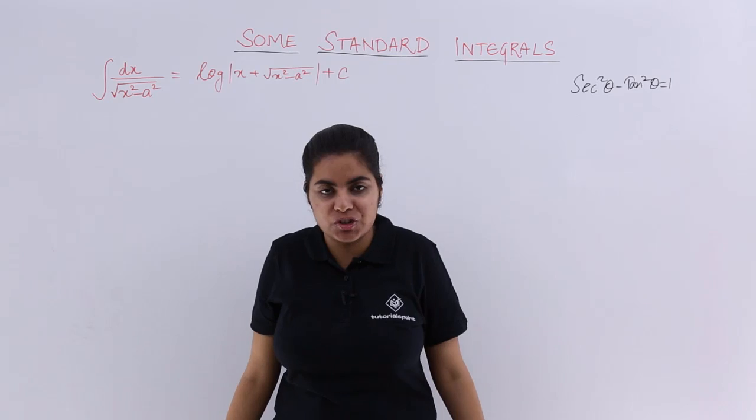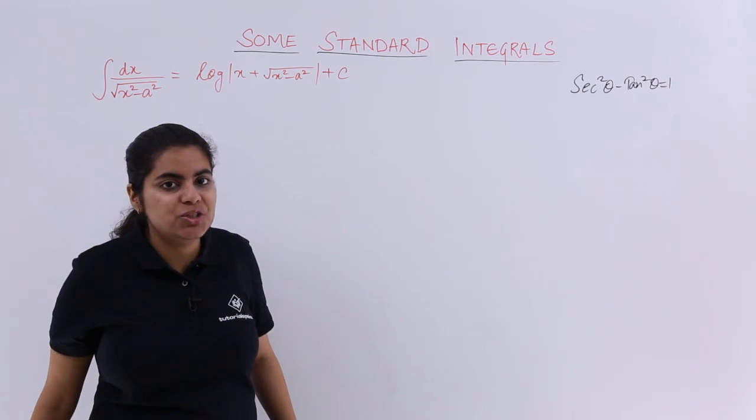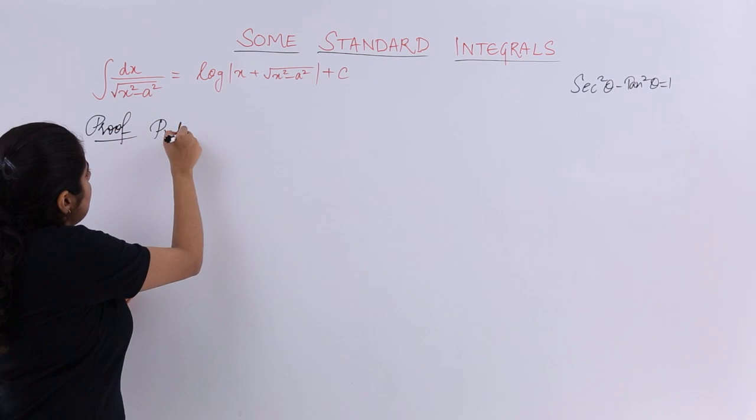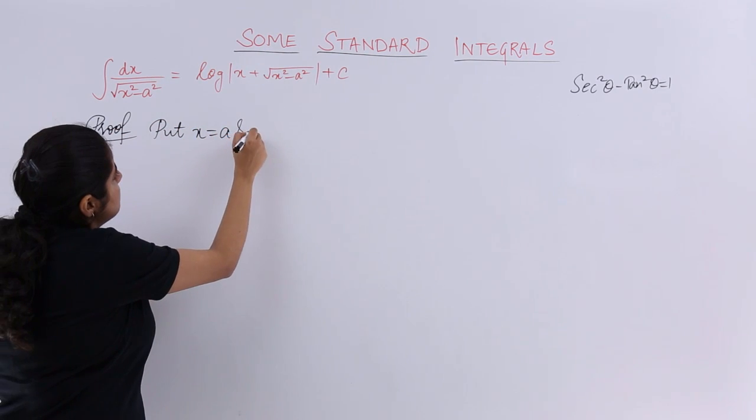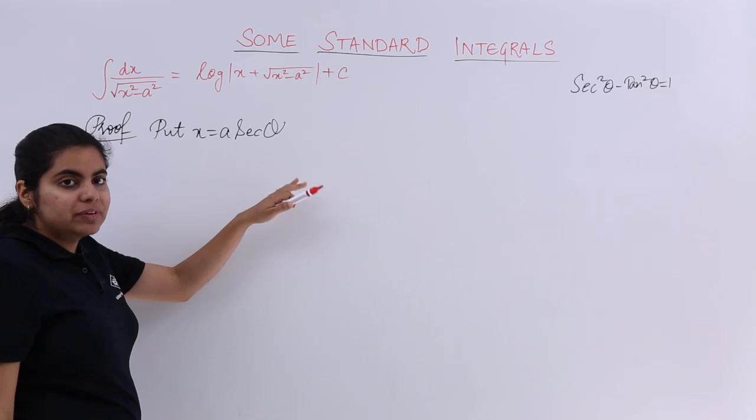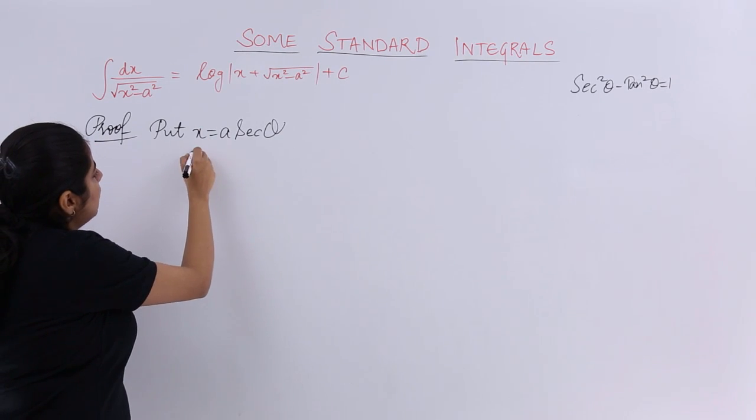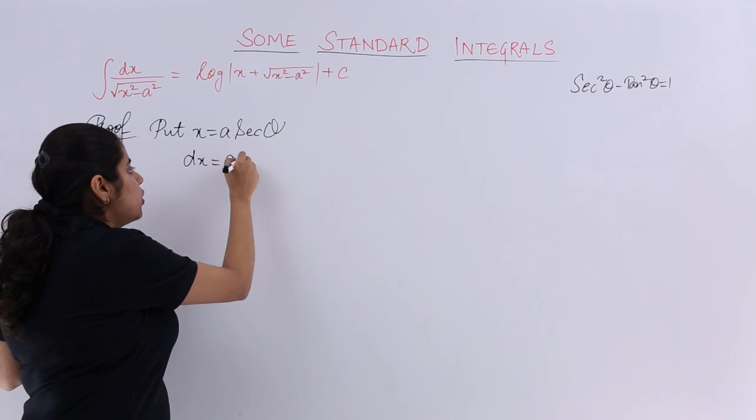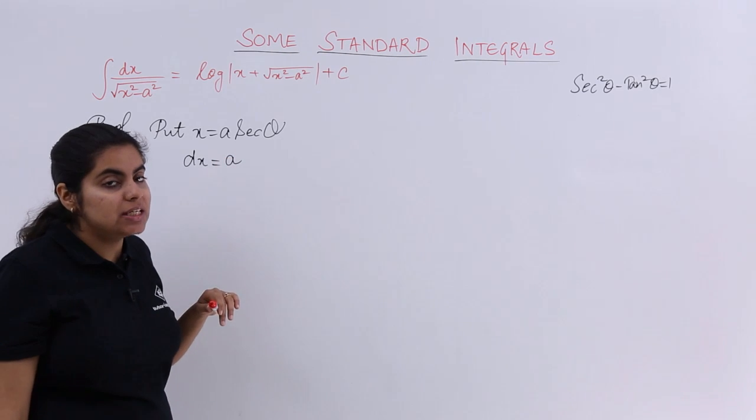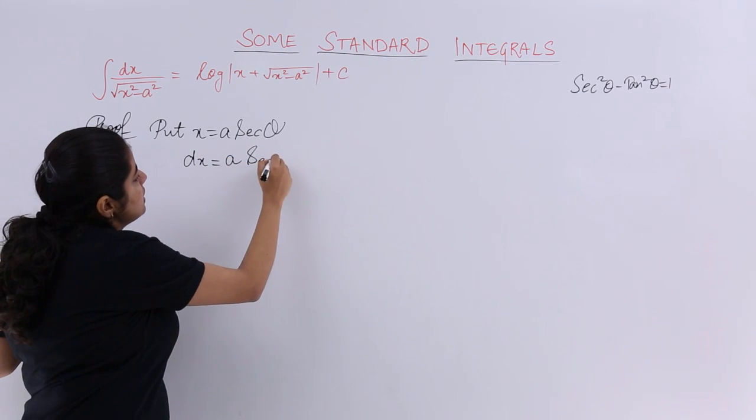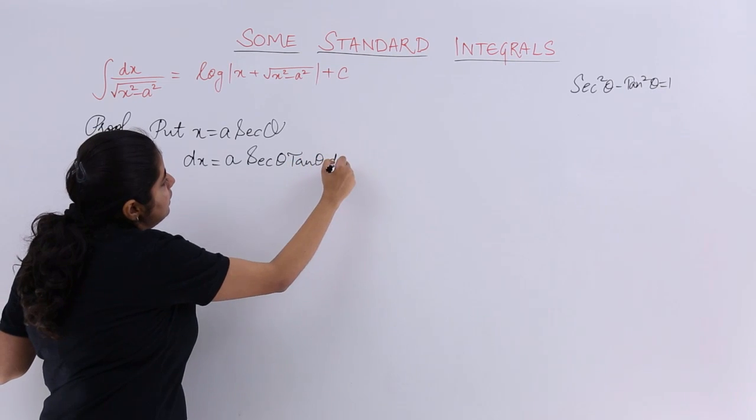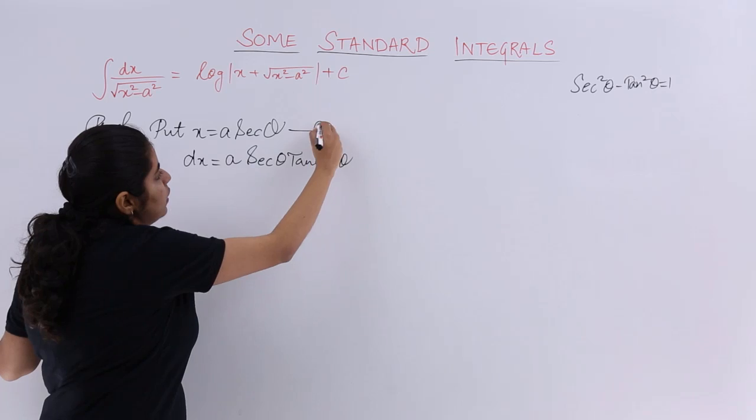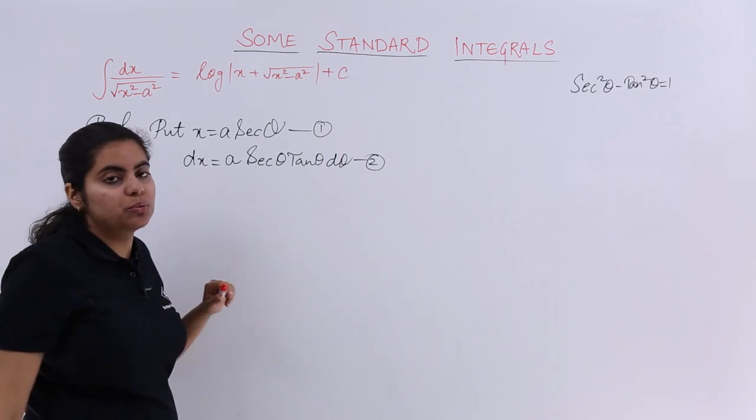So I directly substitute. I put in my proof x is equal to a secant theta, and if this is the story, what is my dx? My dx is simply a, being a constant as it is, differentiation of secant theta is secant theta tan theta d theta, right? So that is very clear. So if I have this as equation number 1 I have this as equation number 2, fine.